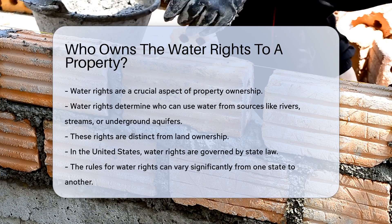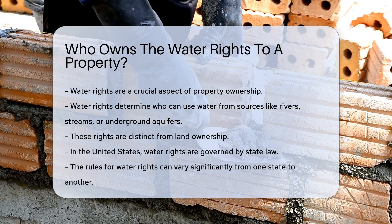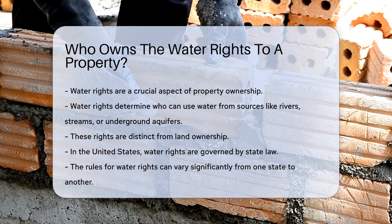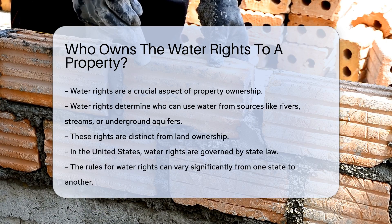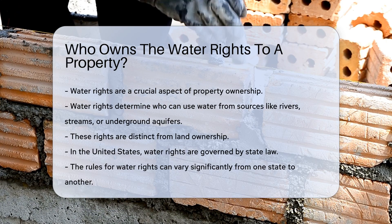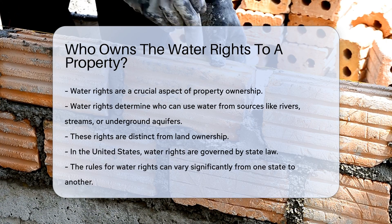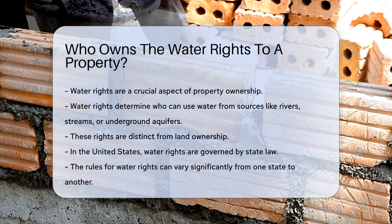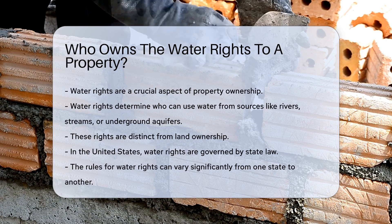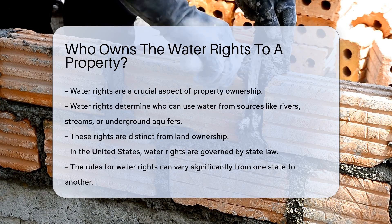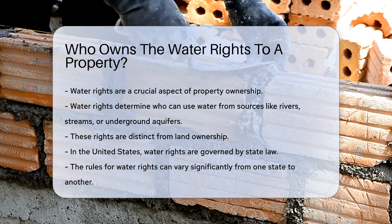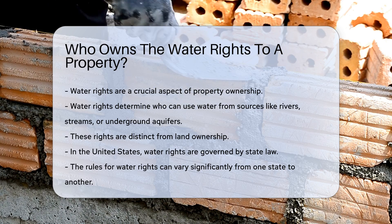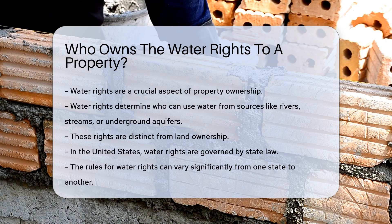Water rights determine who can use water from a source like a river, stream, or underground aquifer. These rights are distinct from land ownership. In the United States, water rights are governed by state law, and the rules can vary significantly from one state to another.